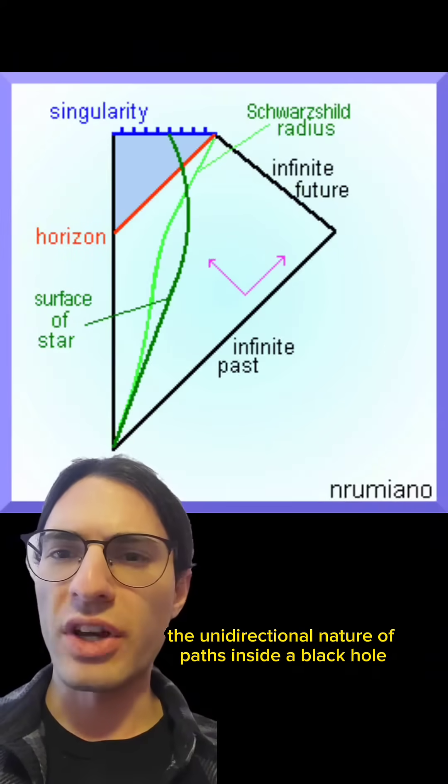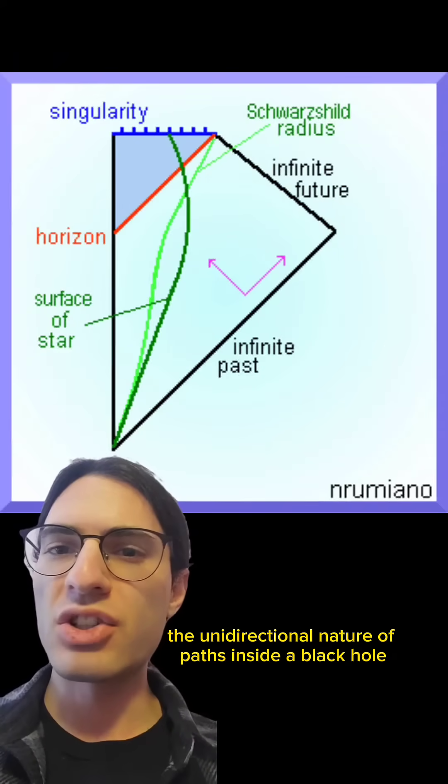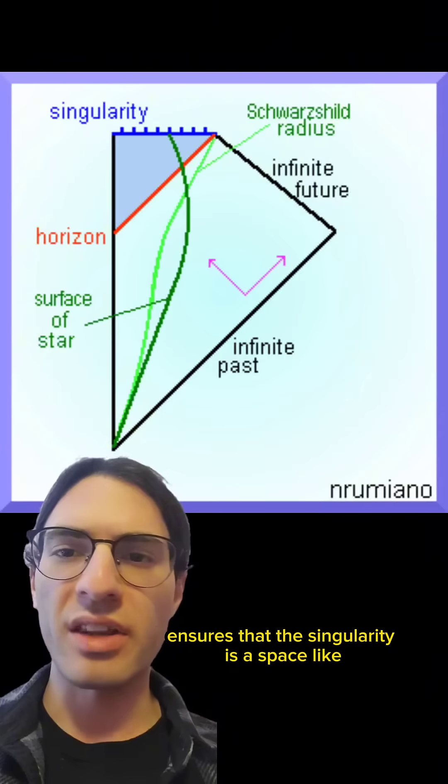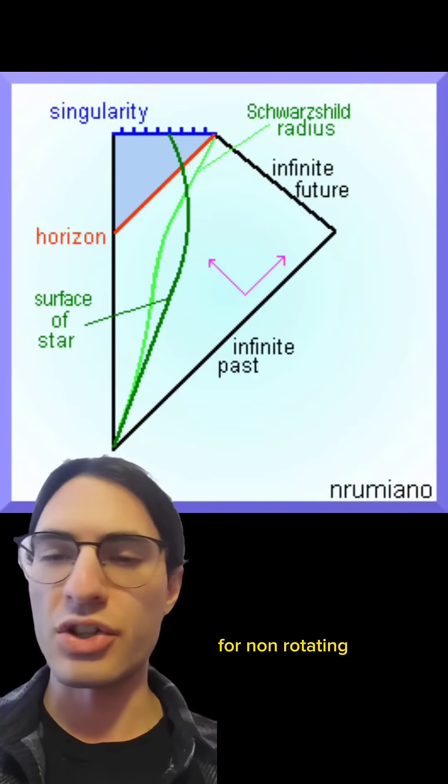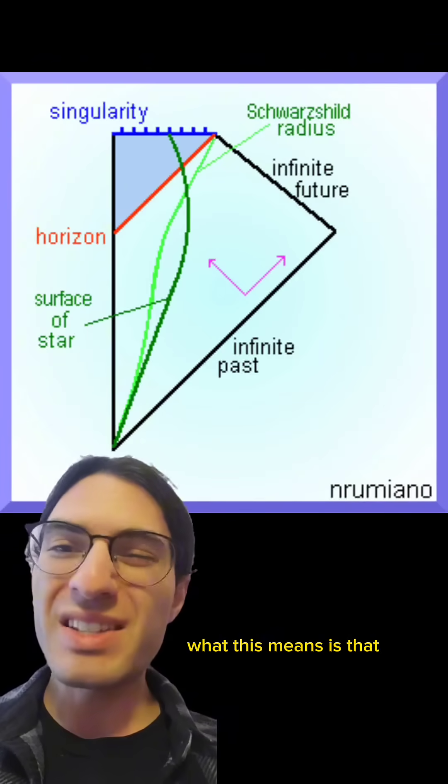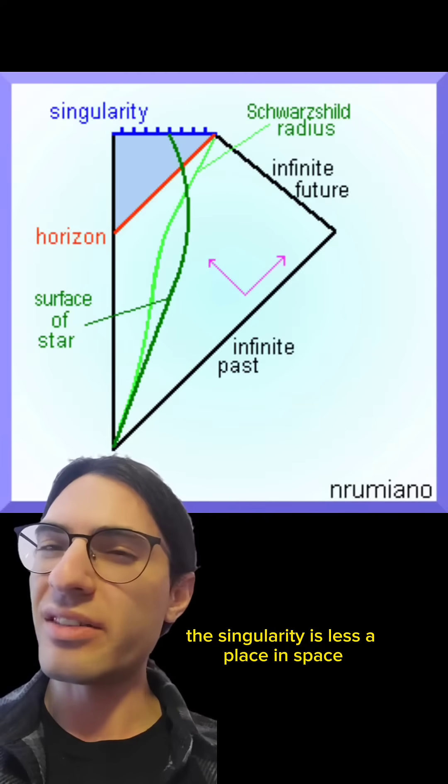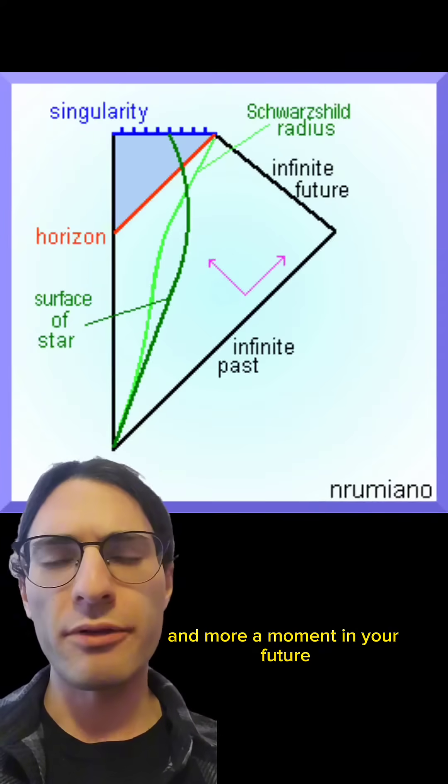In fact, the unidirectional nature of paths inside a black hole ensures that the singularity is a space-like singularity for non-rotating uncharged black holes. What this means is that the singularity is less a place in space and more a moment in your future.